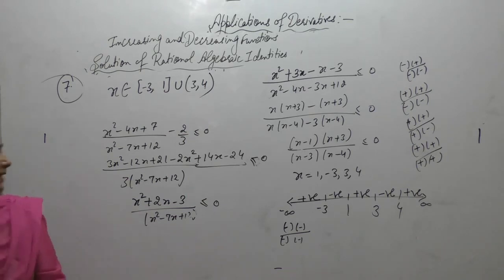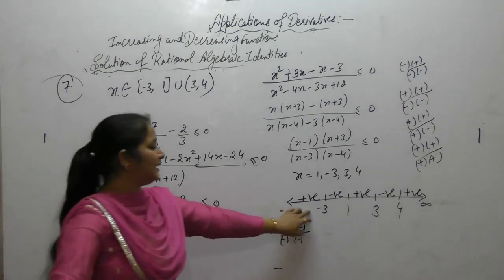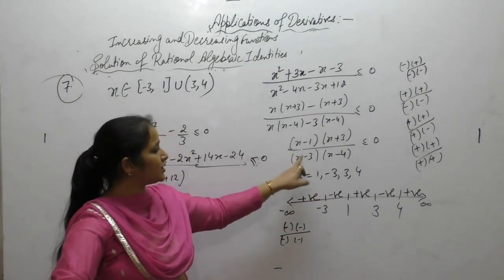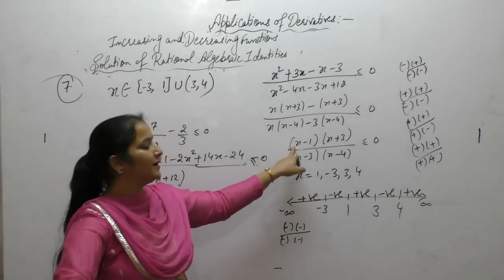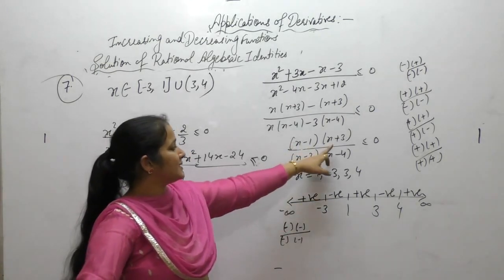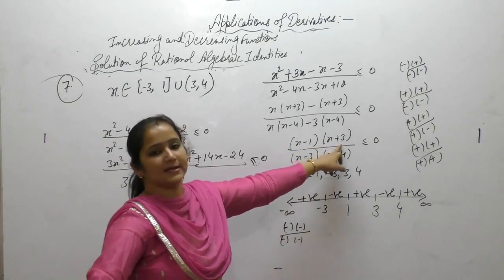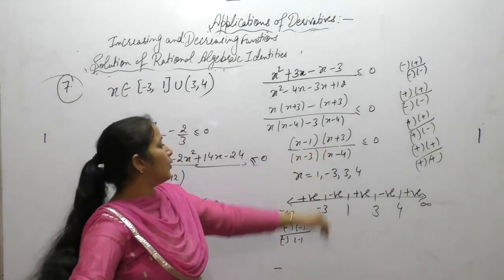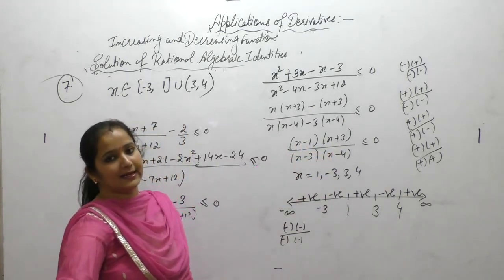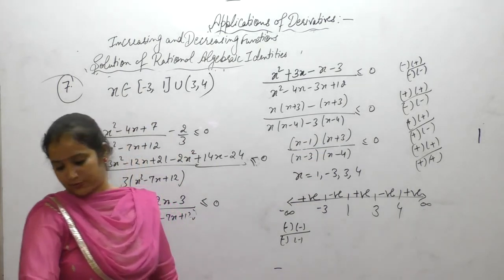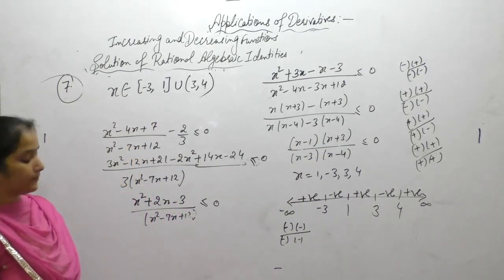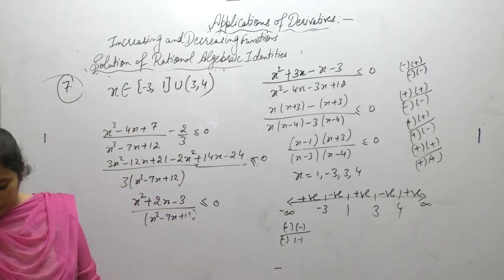The boundary points minus 3 and 1 are included because at those points the function is also equal to zero — putting minus 3 into (x plus 3) gives 0, confirming the function is zero there. Note it down.